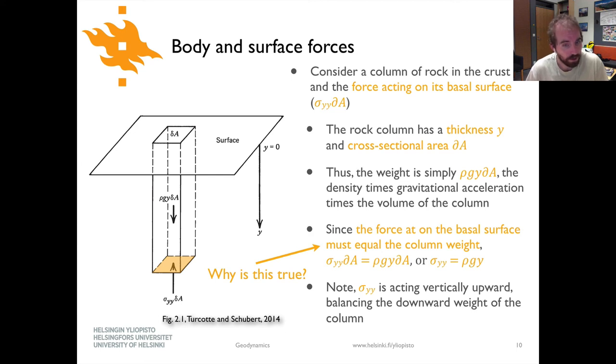So there's one thing here that I think bears a little bit of additional thought, and that is we have made an assumption here, and that is that the force on the basal surface must be equal to the column weight. And why is it that we've made that assumption? Why is it that we can say this is true? So go ahead and pause the video, think about this for just a second, and unpause it when you think you've got an idea.